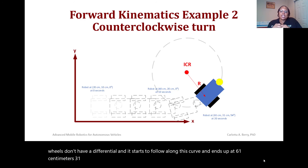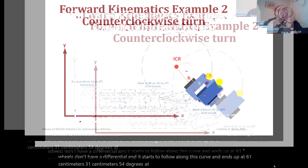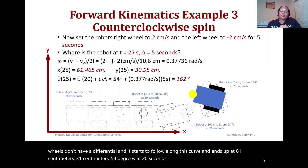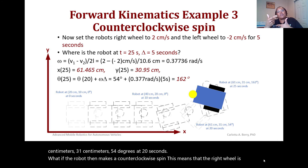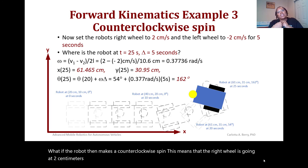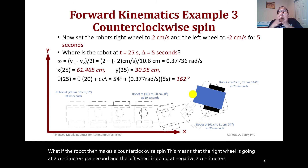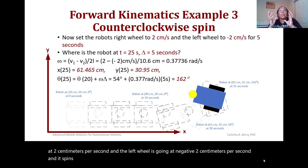What if the robot then makes a counterclockwise spin? This means the right wheel is going at 2 cm/s and the left wheel at −2 cm/s, spinning for 5 seconds. Where would the robot be at 25 seconds? First, we find omega and get 0.37736 radians per second.